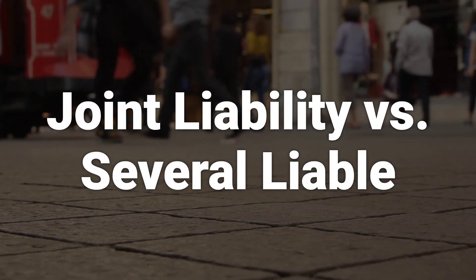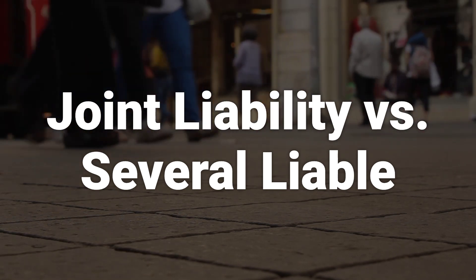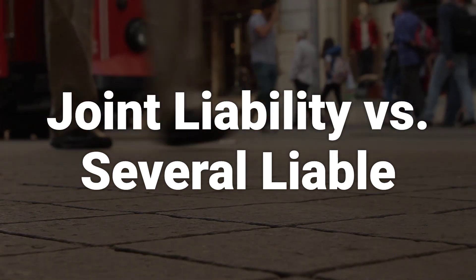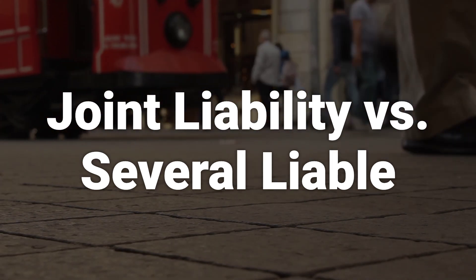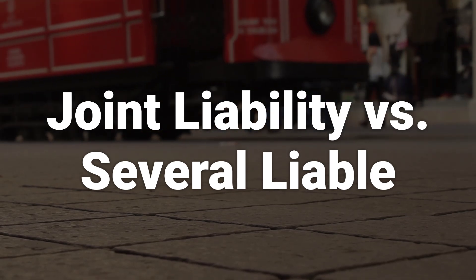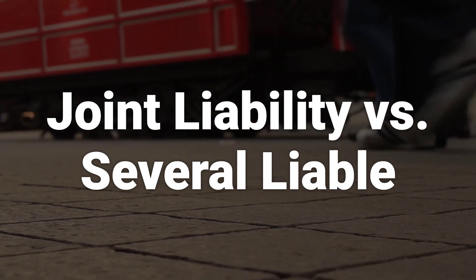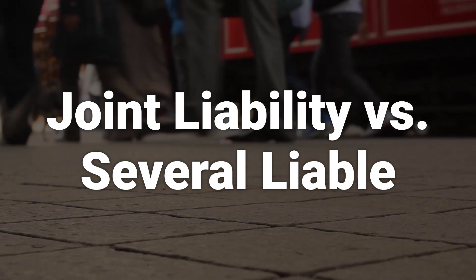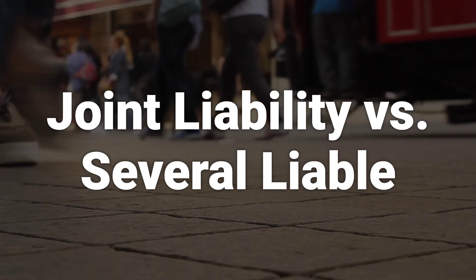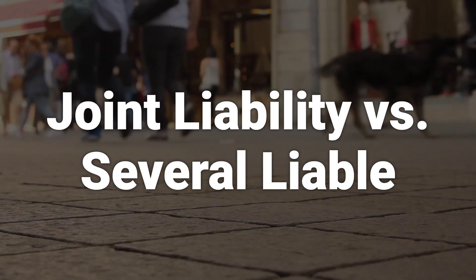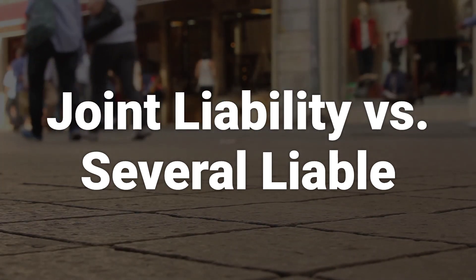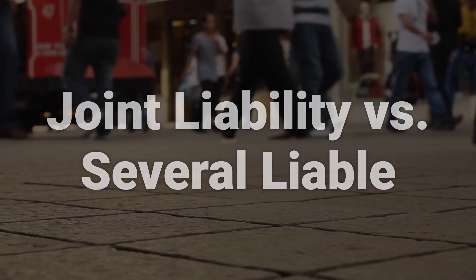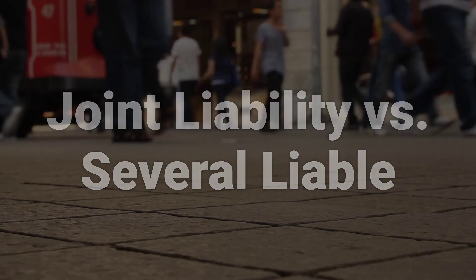Several liability, or proportionate liability, differs from joint liability in that all parties are only liable for their own respective obligations. In a business partnership scenario, each partner is responsible for their own share of the debt, and if one partner fails to meet their obligation, the lender can only sue that one partner for their share.